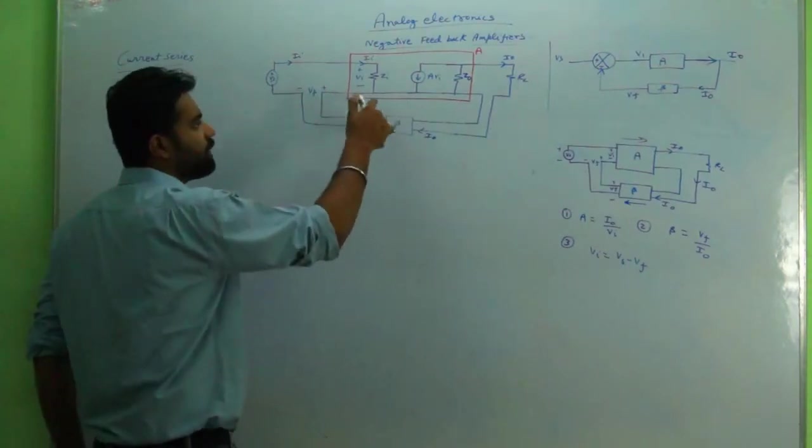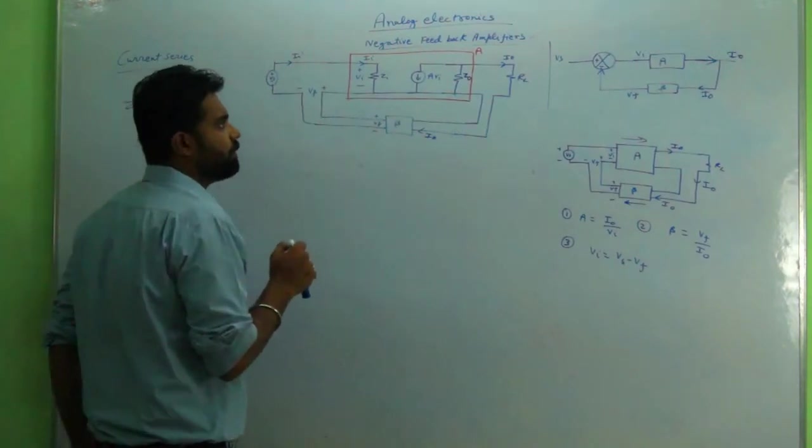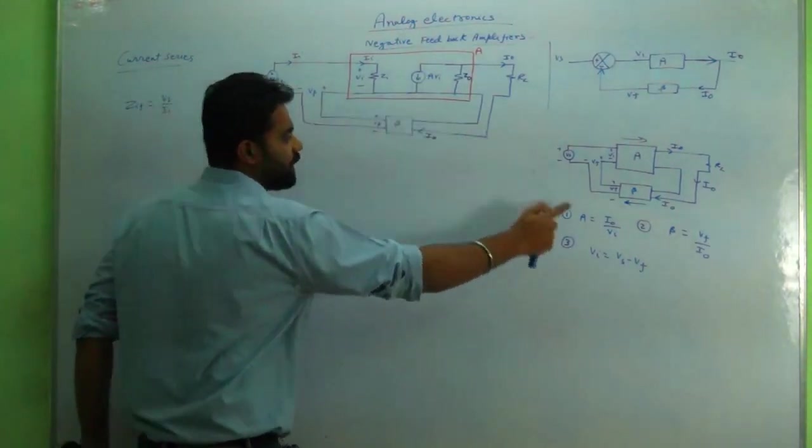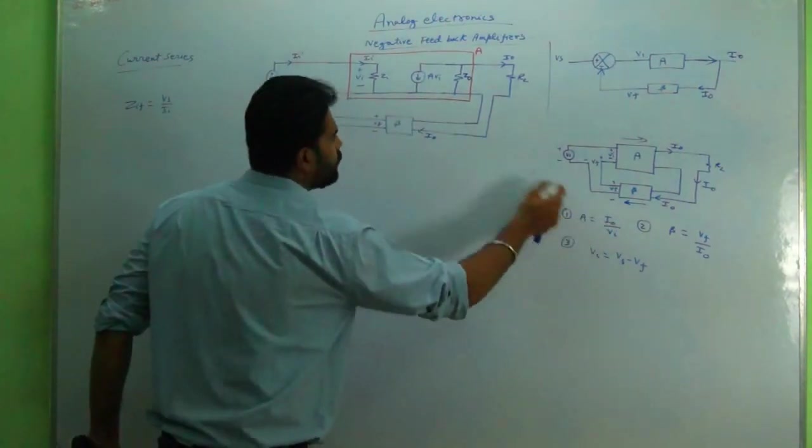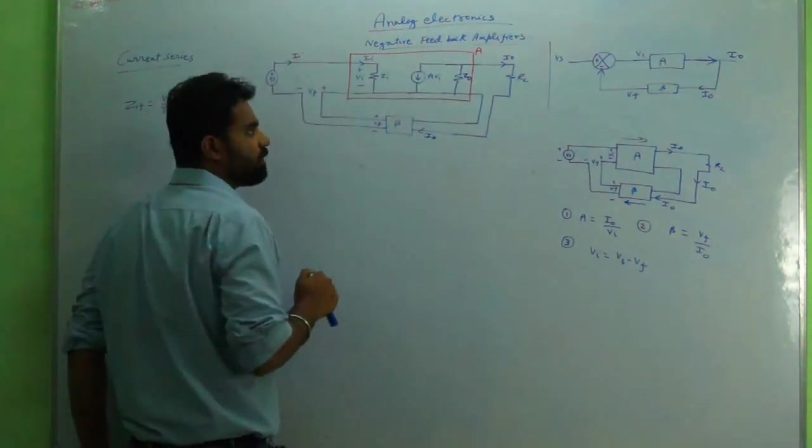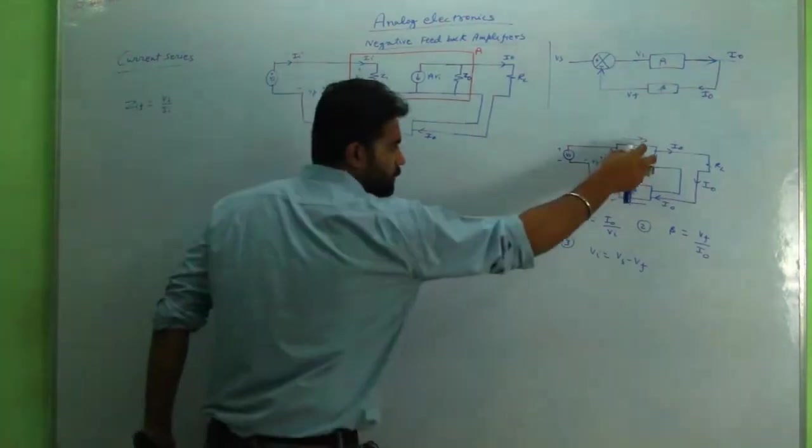The input impedance is zi, input current is ii. ii into zi is vi that is available and amplification is a into vi, so a into vi is the amplification. z0 is the output impedance we are having, and the rest is same as the block diagram. The only thing is a has been described in detail here.